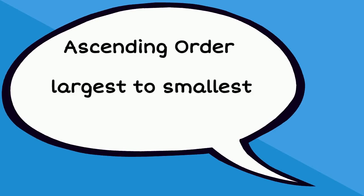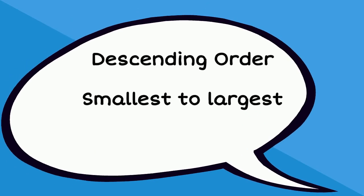When we put numbers in order from largest to smallest, we put them in ascending order. And when we put them in the order of smallest to largest, we put them in ascending order.